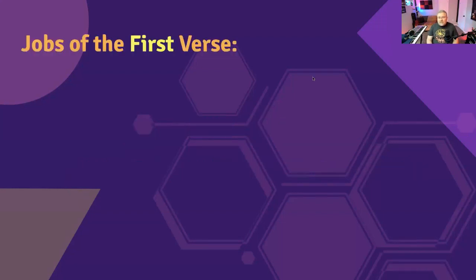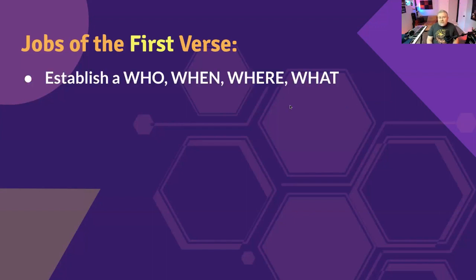Let's start by talking about the job of the first verse. The job of the first verse is to establish a who, a when, a where, and a what. In a lot of ways, songwriting is like journalism — reporters are taught to ask who, where, when, what, why, and how questions to make sure they're answering what their reader or listener may have.